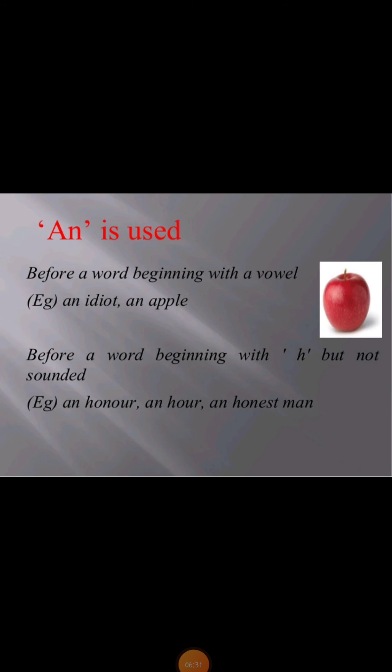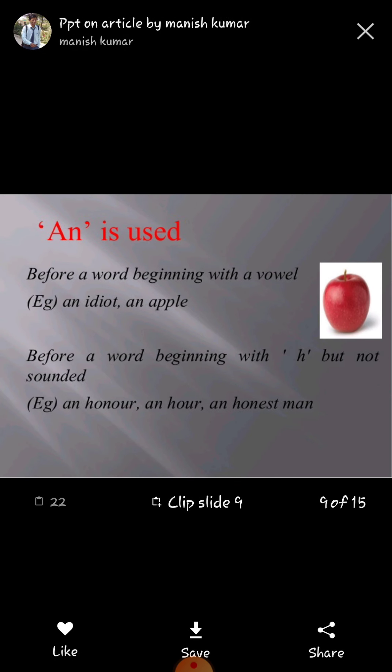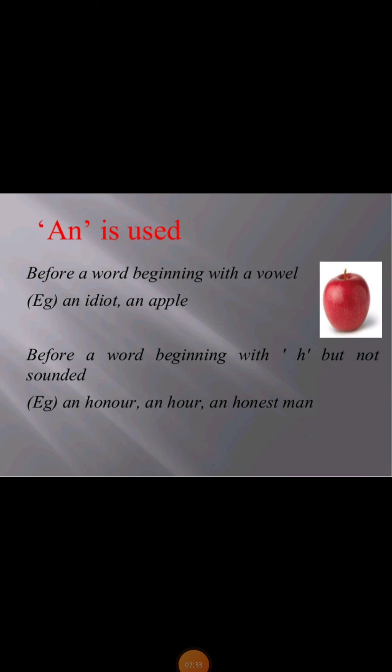Now we will learn about an — when we will use an. An is used before a word beginning with a vowel, like an idiot, an apple. An is also used before a word beginning with h when the h is not sounded. Examples: an honour, an honest man. In 'honest,' it starts with h, which is a consonant, but the h is not sounded, so we use an because the sound is a vowel sound.